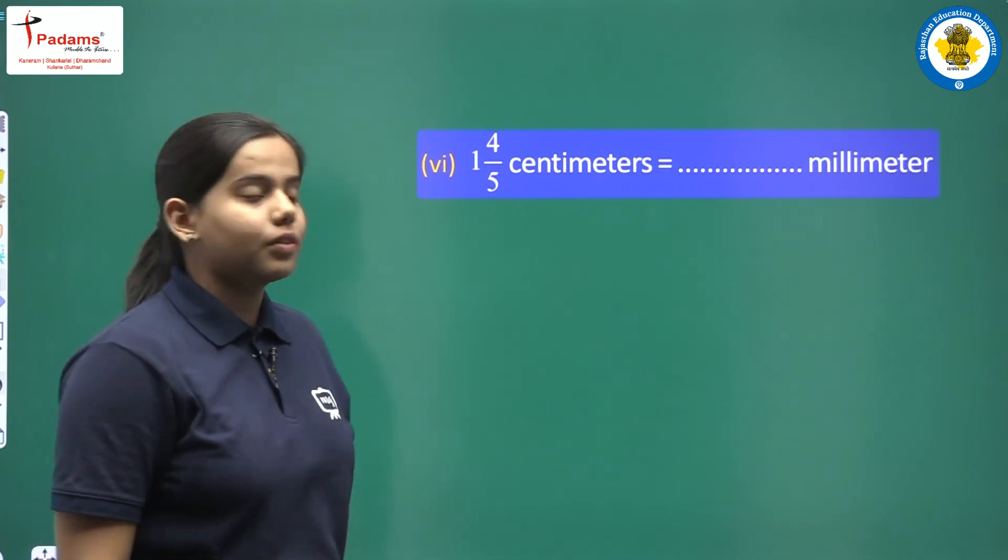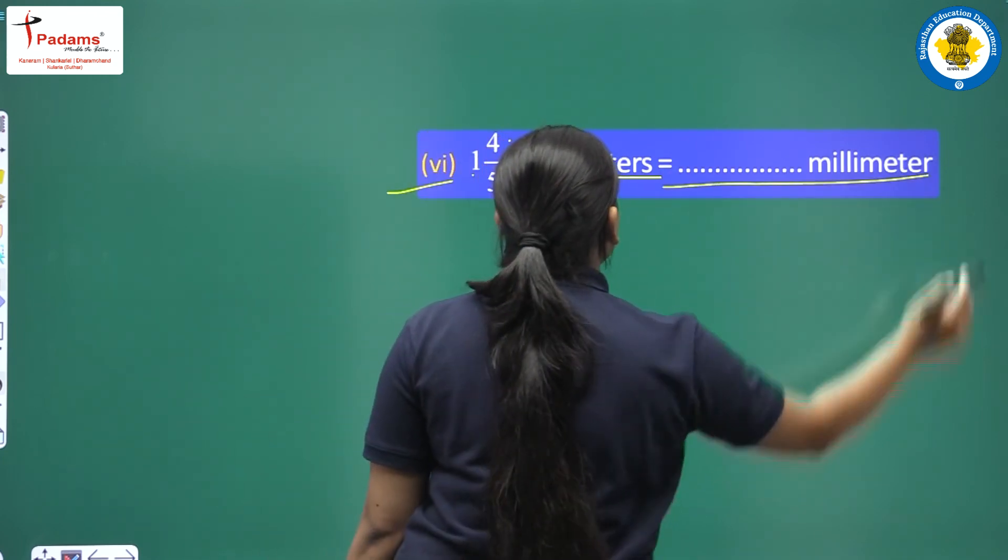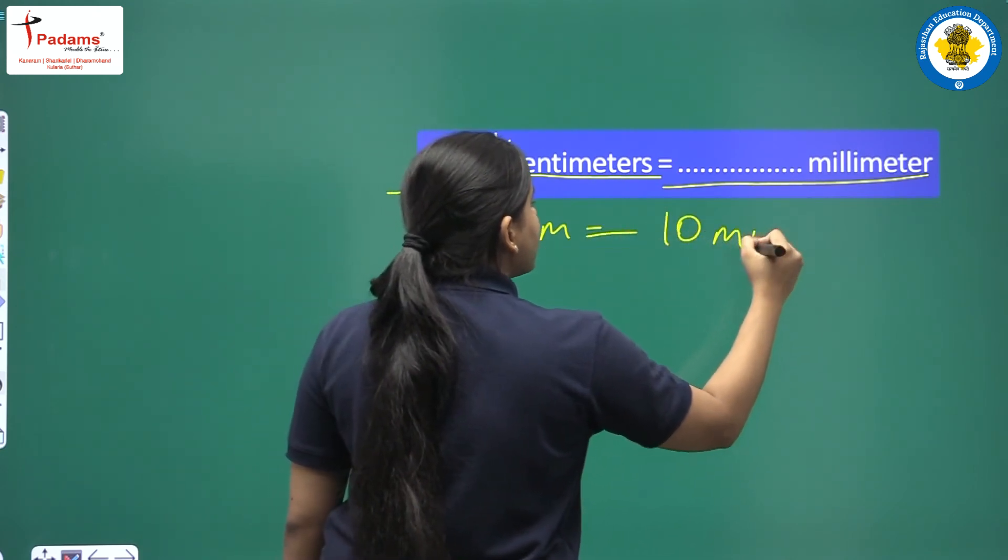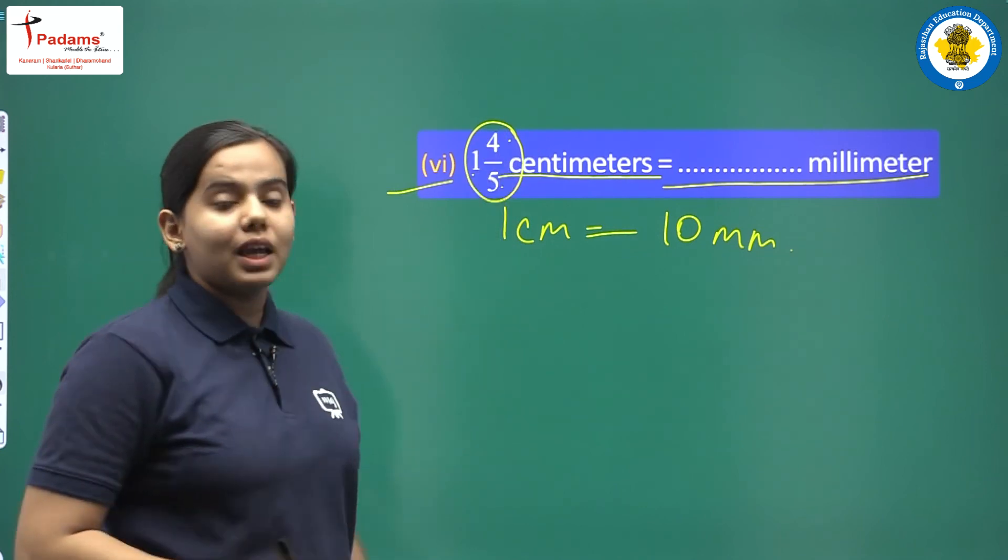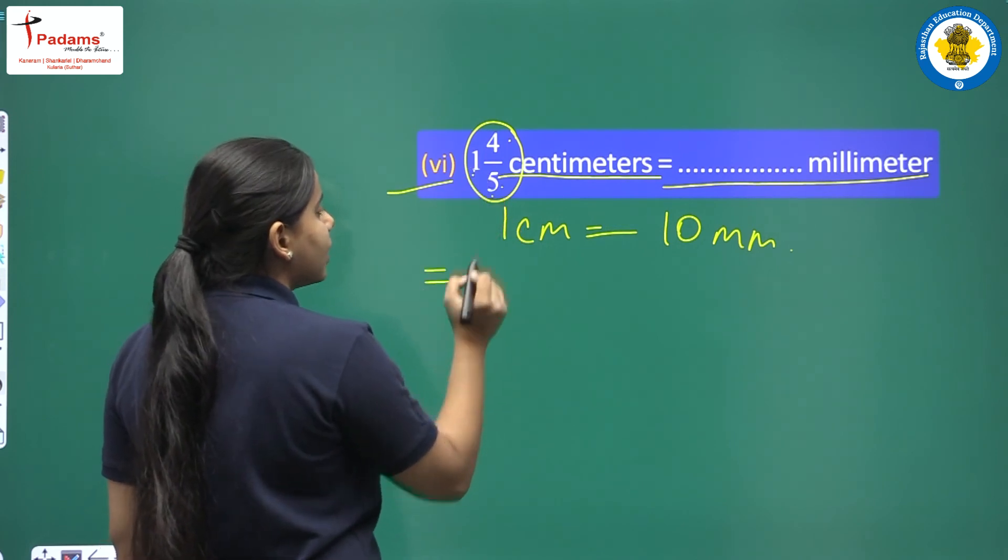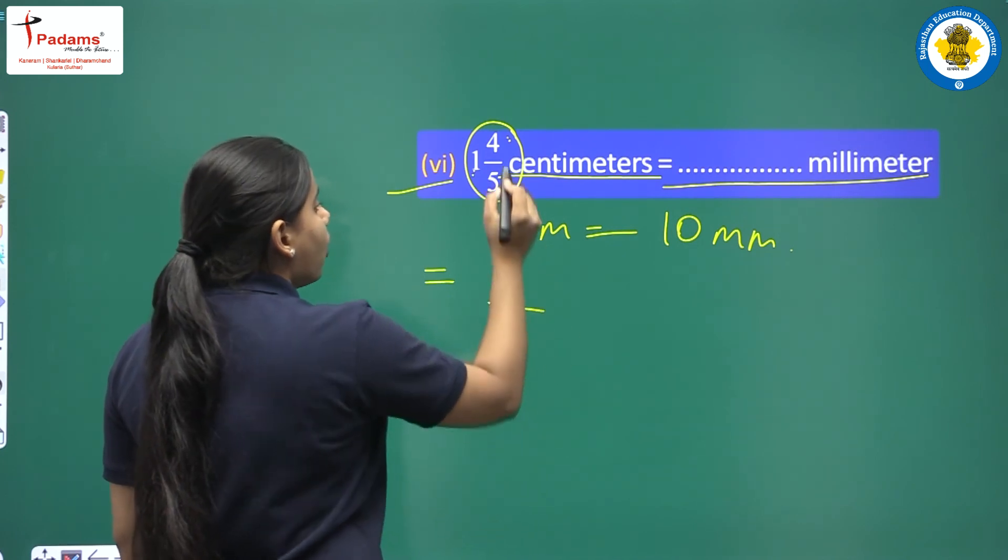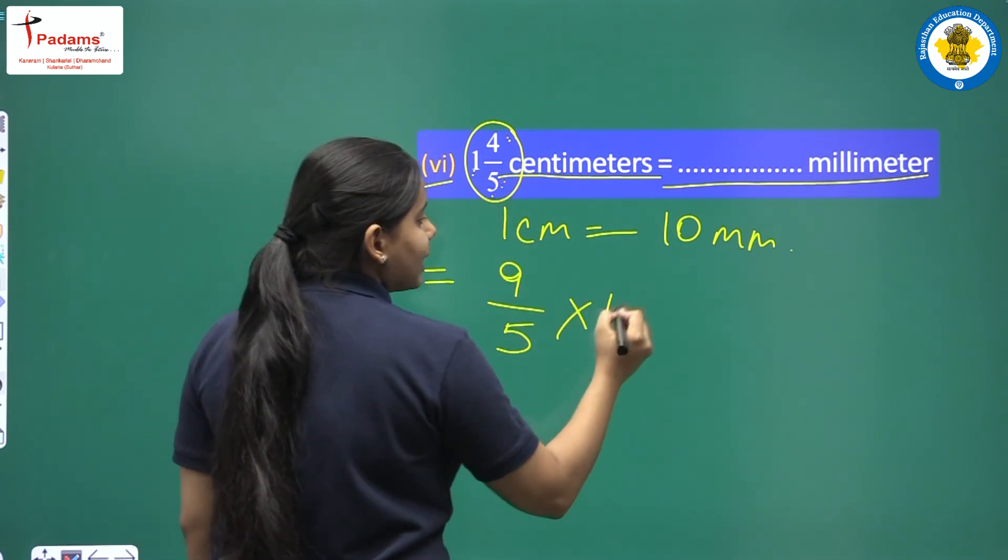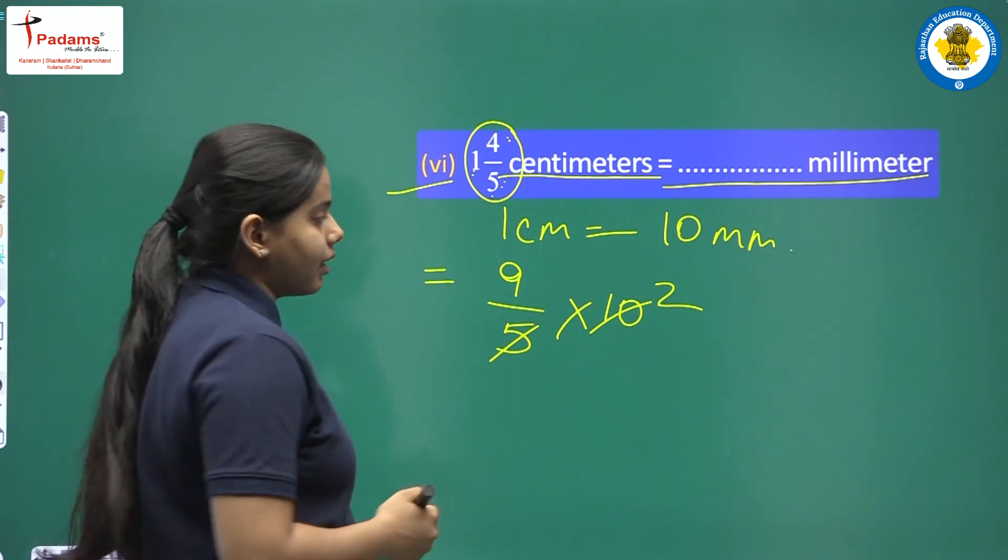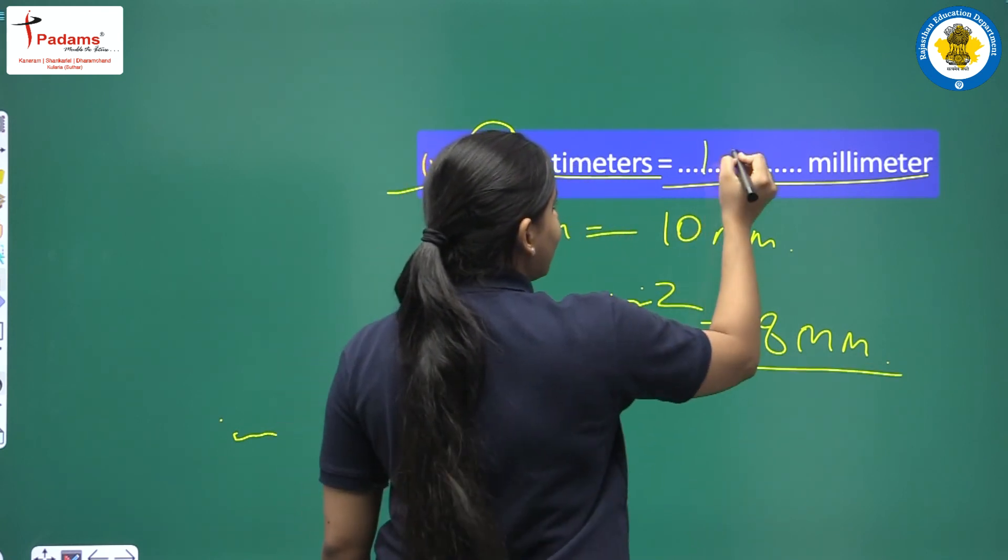Now we will move on to the last question. This is the sixth question. 1 whole 4 upon 5 centimeter equals dash millimeter. Now see. You know that 1 centimeter equals 10 millimeters. And first step will be to change this mixed fraction into improper fraction. How will we do? 5 multiply by 1, we will get 5. Add 4. So 5 plus 4 is 9. And denominator same. We have to multiply by 10. Now divide by 5. Here comes 2. Because 5 twos is 10. Now 9 twos is 18. This means this is our final answer. 18 millimeters. Right children.